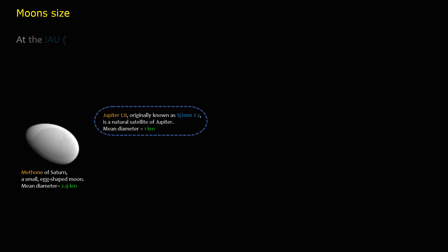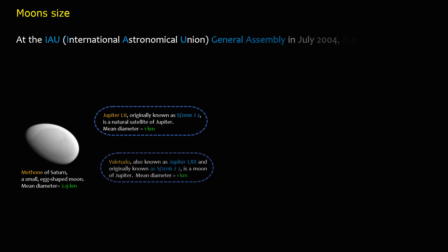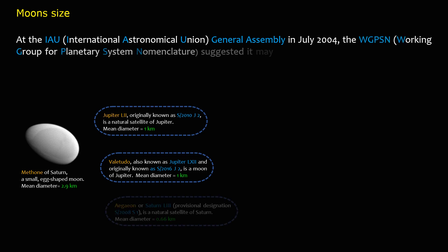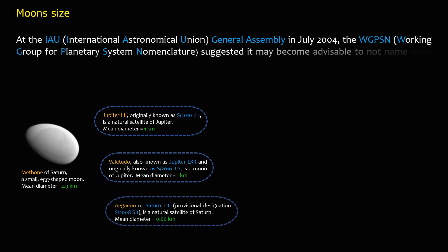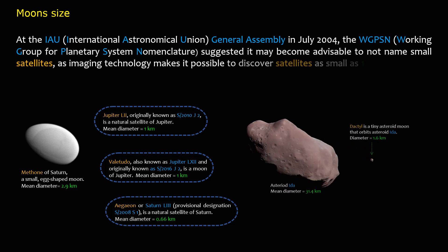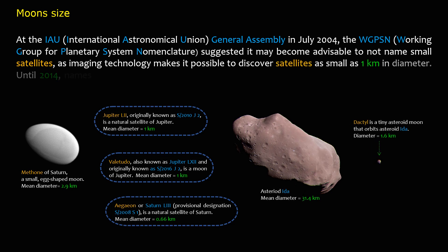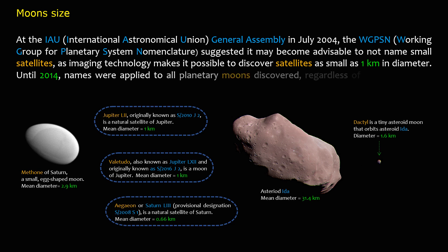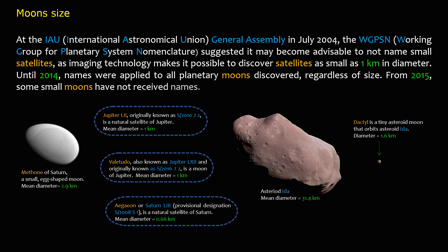At the IAU International Astronomical Union General Assembly in July 2004, the WGPSN — Working Group for Planetary System Nomenclature — suggested it may become advisable to not name small satellites, as imaging technology makes it possible to discover satellites as small as one kilometer in diameter. Until 2014, names were applied to all planetary moons discovered regardless of size. From 2015, some small moons have not received names.